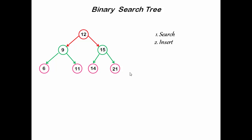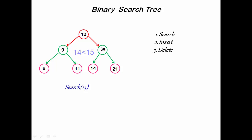First we learn how to search an element in a binary search tree. Let's search for 14. We compare 14 with the root node — since 14 is greater than 12, we proceed to the right child of 12, which is 15. Now compare 14 with 15 — 14 is less than 15, so we proceed to the left child of 15, and the match is found. To search an element in a binary search tree we need log n comparisons in the average case, so the average case time complexity is O(log n).